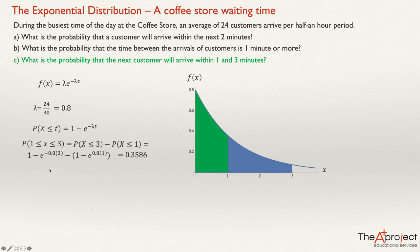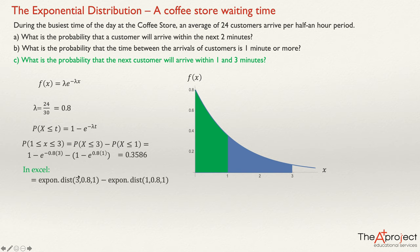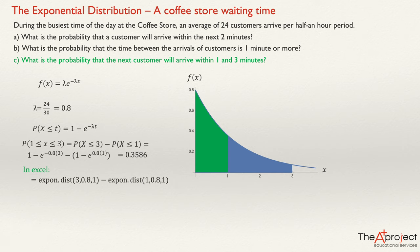If you are doing this in Excel, compute the cumulative probability with x = 3, minus the cumulative probability with x = 1. The parameter lambda is the same in both, and both are cumulative. Don't forget the equal sign. Press enter and you get the same answer: 0.3586. That concludes the explanation of this problem.